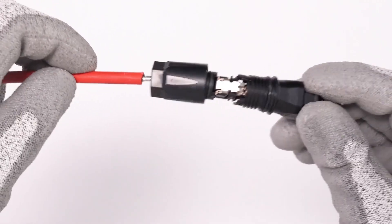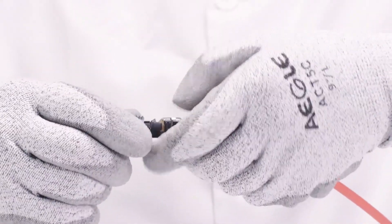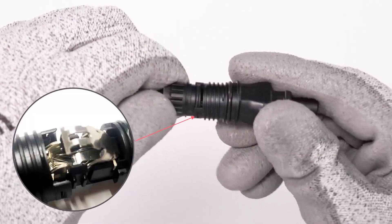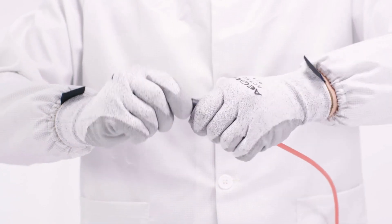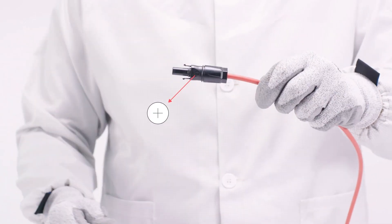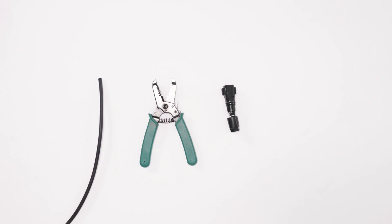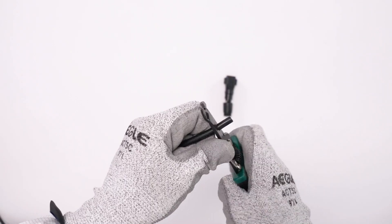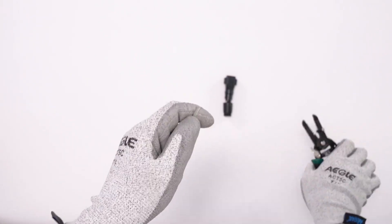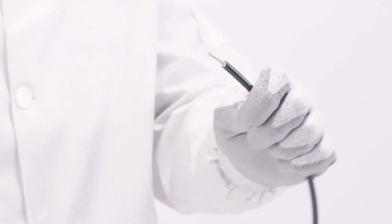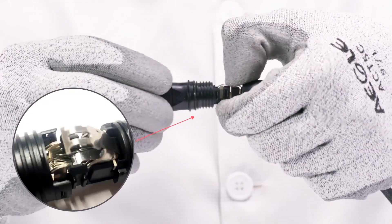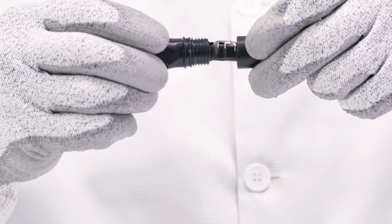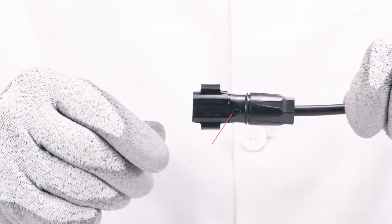Route the stripped cable all the way into the DC connector. Ensure that the stripped cable and the DC connector have the same polarity. Press the clamping bracket down until it audibly snaps into place. Ensure that the cable is correctly positioned. Push the swivel nut up to the thread and tighten.